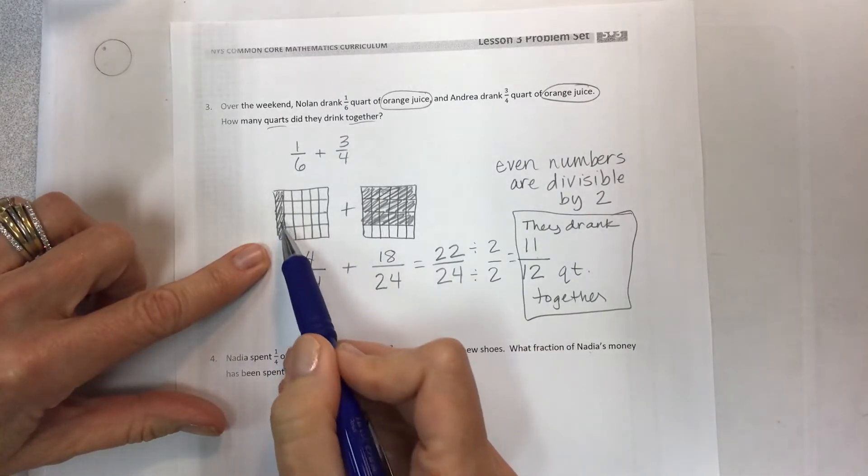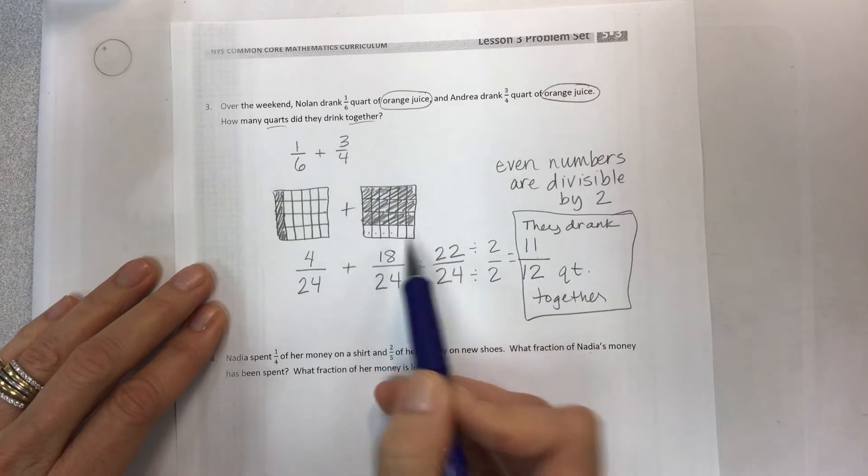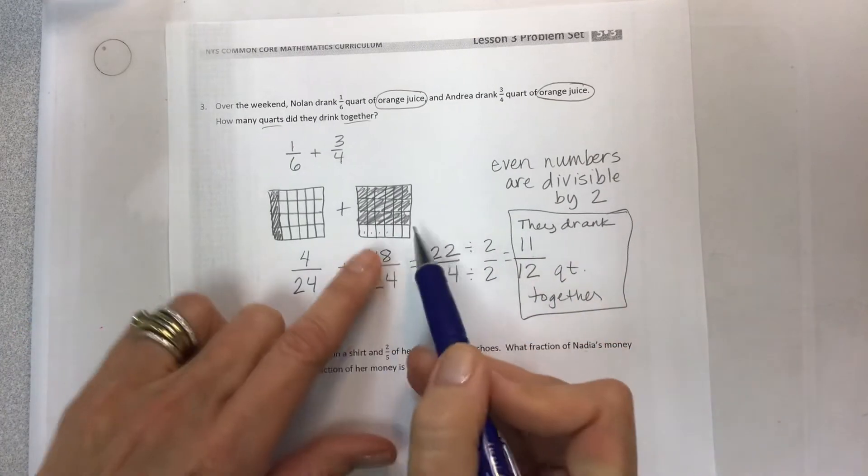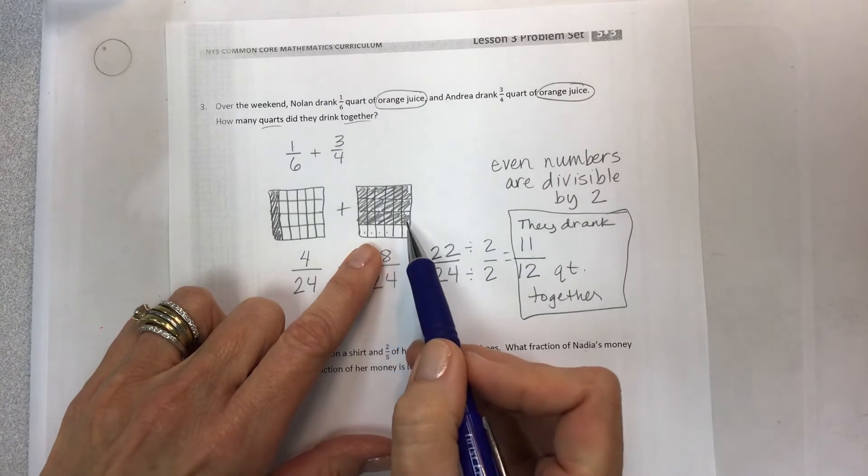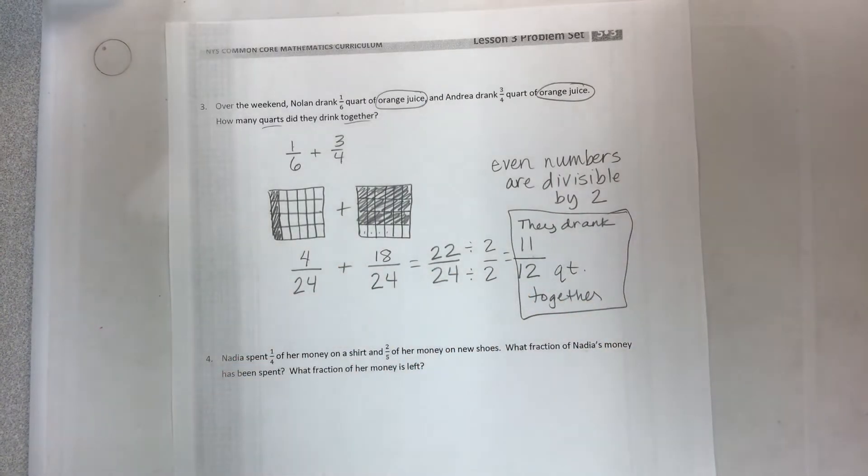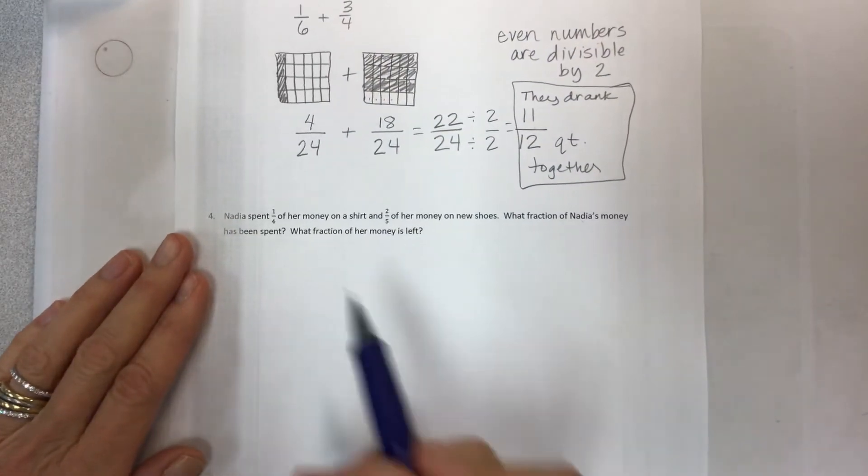How do I label my answer? I'm going to go back and reread - this is all about quarts of orange juice. How many quarts did they drink together? They drank 11/12 quart together.